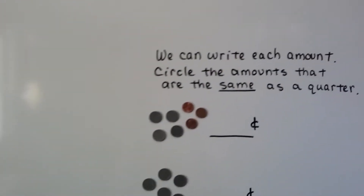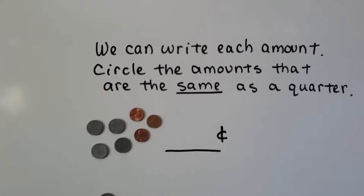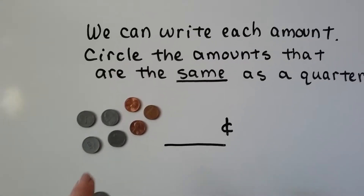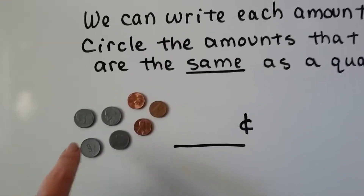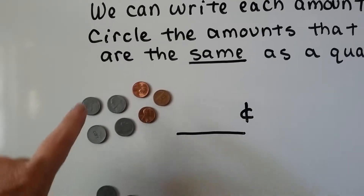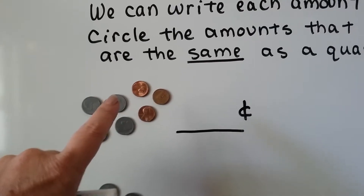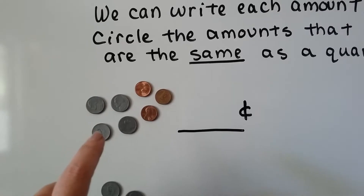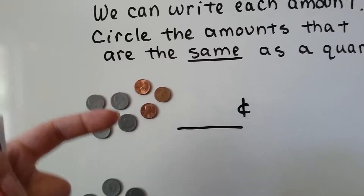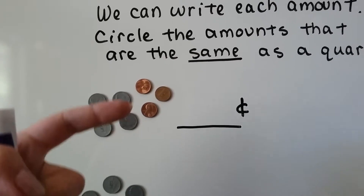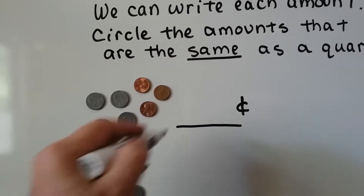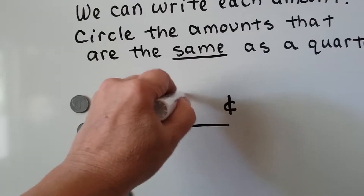We can write each amount and then circle the amounts that are the same as a quarter. So we can count on. We have four nickels and three pennies. Five and five — that's 10. Another five and five — that's another 10. So we have 10 and 10, that's 20. Then 21, 22, 23. We have 23 cents here.